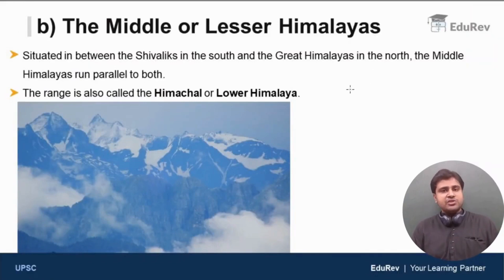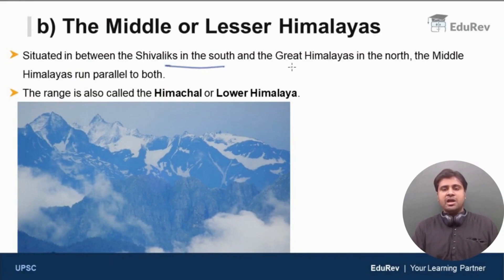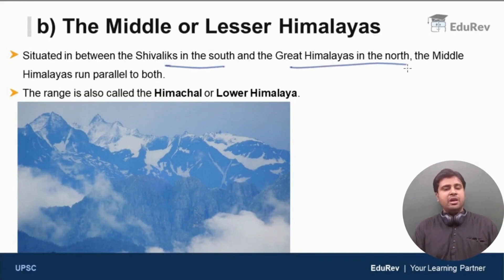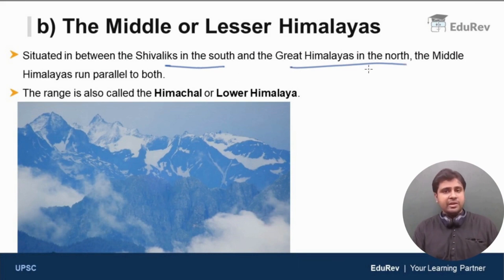Middle Himalayas are situated between Shivaliks in the south and the great Himalayas in the north. Middle Himalayas run parallel to both Shivaliks in the south as well as the great Himalayas in the north.